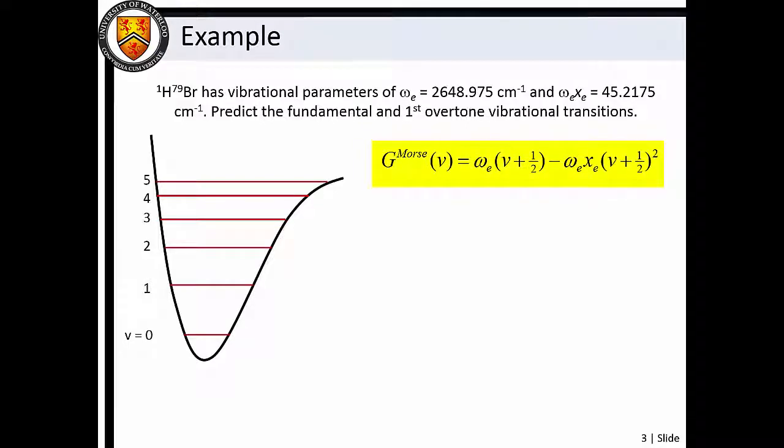If we employ the Morse oscillator energy level expression, we can describe vibrational level energies in terms of a harmonic vibrational constant omega e and the anharmonicity constant omega e x e.